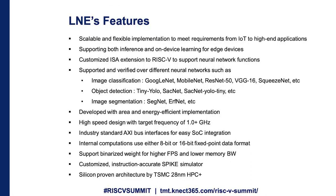Many neural networks are already verified and supported. For image classification, it includes GoogLeNet, MobileNet, and others. For object detection, it supports Tiny YOLO, SACNet, and others. For image segmentation, it supports SEGNet, ERFNet, and others. It has a high-speed data path with a target frequency of 1 GHz and industry-standard AXI interfaces for easy SoC integration. It supports 16-bit and 8-bit data paths, and there is a binarized weight feature to achieve higher frames per second and lower DDR bandwidth.